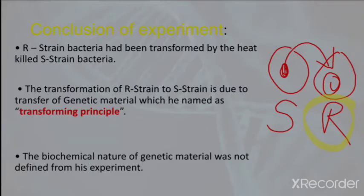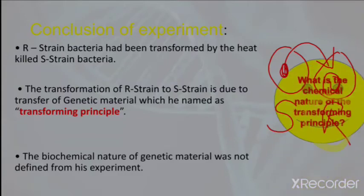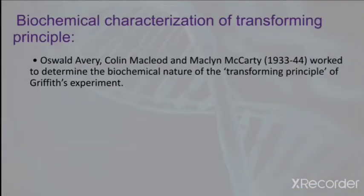In order to determine the biochemical nature of the genetic material, another experiment was performed by three scientists — Oswald Avery, Colin MacLeod, and McCarty — in the year 1933, nearly five years after Griffith's experiment. They worked mainly to determine whether the genetic material was DNA, RNA, proteins, fats, or lipids.